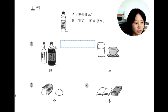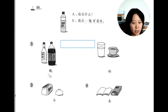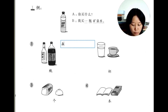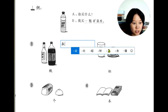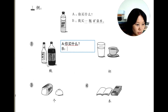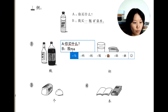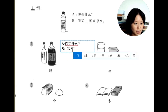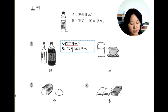Now we use 瓶 to make this dialogue. A asks: 你买什么? — What do you buy? And B can say: 我买两瓶汽水. 汽水 is soda drink.